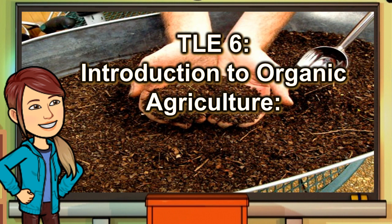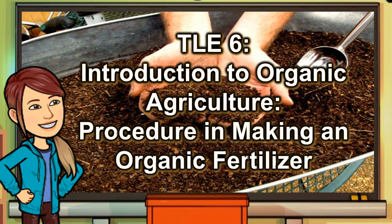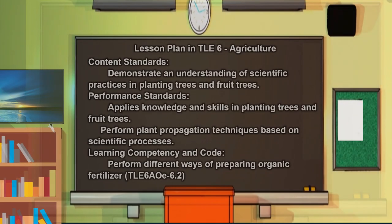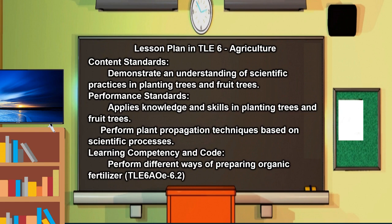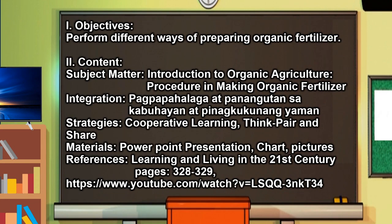TLE 6: Introduction to Organic Agriculture. Procedure in making an organic fertilizer. Objective: perform different ways of preparing organic fertilizer. Content subject matter: introduction to organic agriculture, procedure in making organic fertilizer.